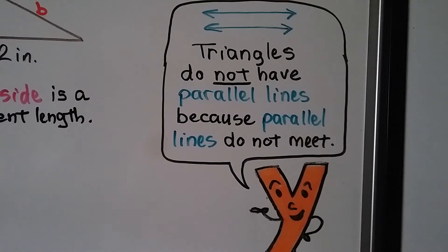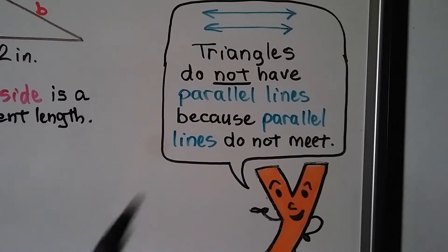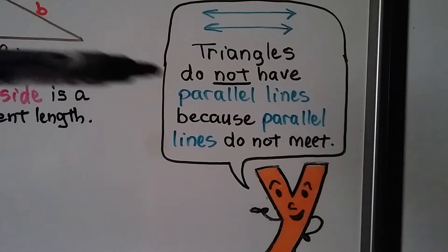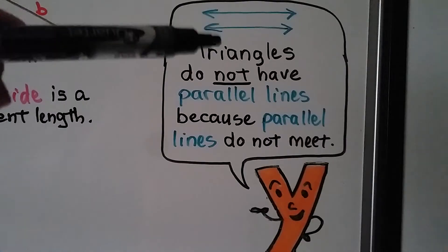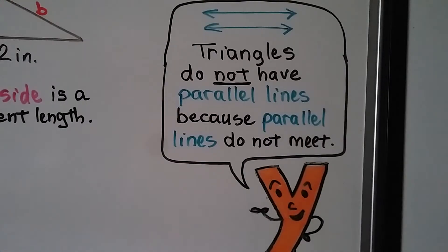Remember, triangles do not have parallel lines because parallel lines do not meet — they stay the same distance apart from each other. So triangles can't have parallel lines.